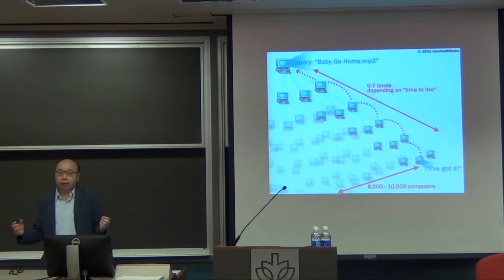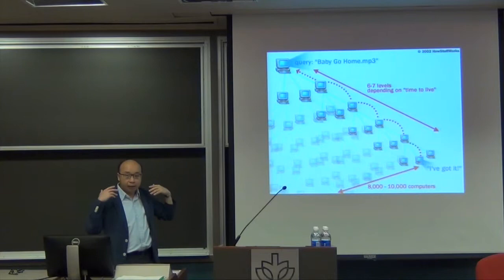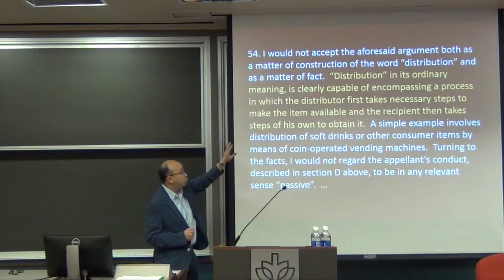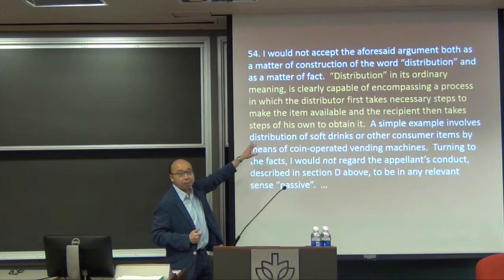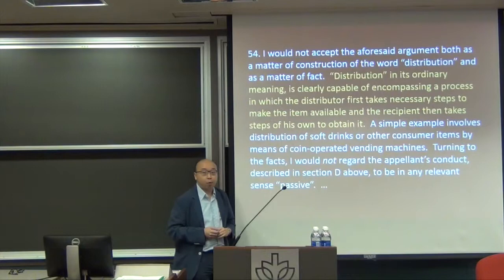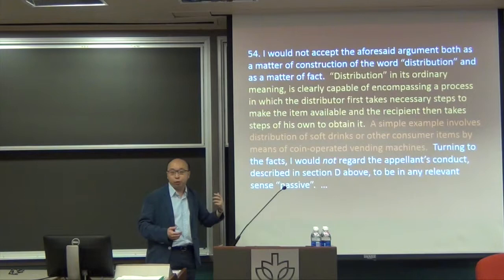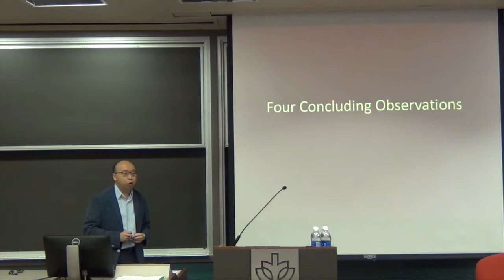When the prosecutor tried to prosecute the case, they had to go for attempt to distribute rather than distribution, because it was very hard to show that an infringing copy had actually been distributed. When it got before the court of final appeal, the judges — not being IP specialists — mixed up the distribution issue and making available. They said distribution is basically the necessary steps to make the item available, and they went further with a vending machine analogy: inserting a coin causes the machine to distribute the soft drink, but the drink is inside the machine until you insert the coin.